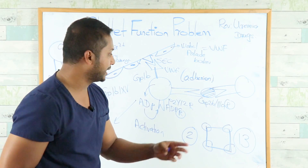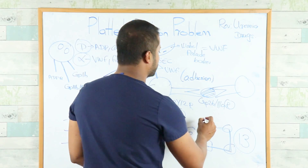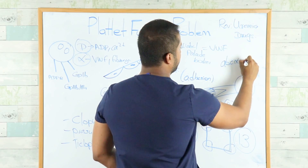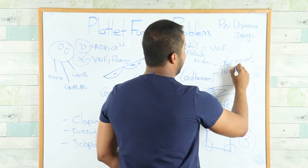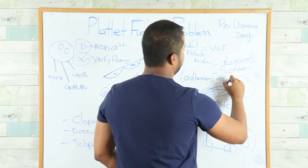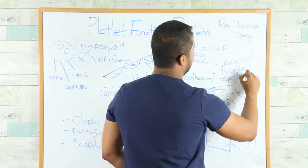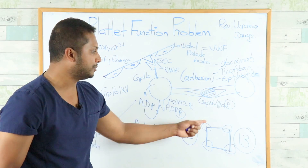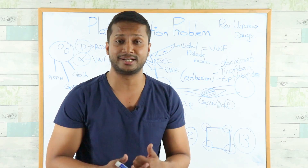Certain medications can block the GP2b3a receptor directly. These include abciximab, tirofiban, and eptifibatide. By blocking GP2b3a, these drugs prevent platelet aggregation and are another reversible cause of platelet dysfunction.